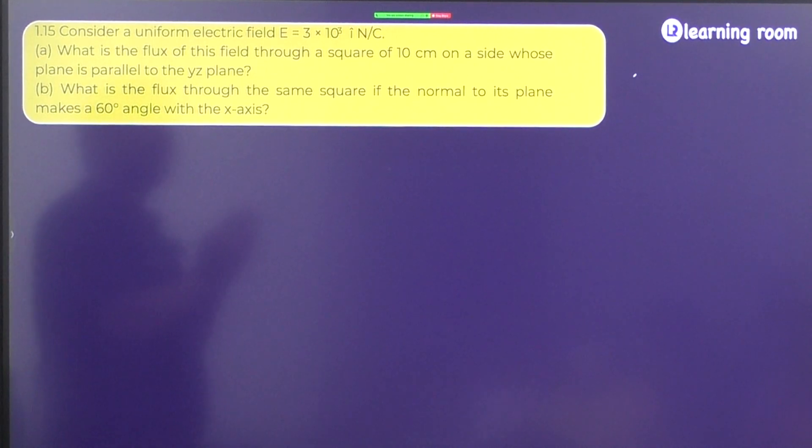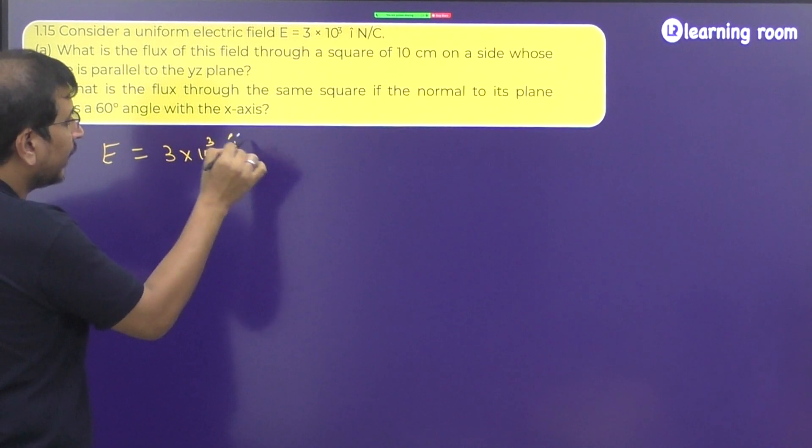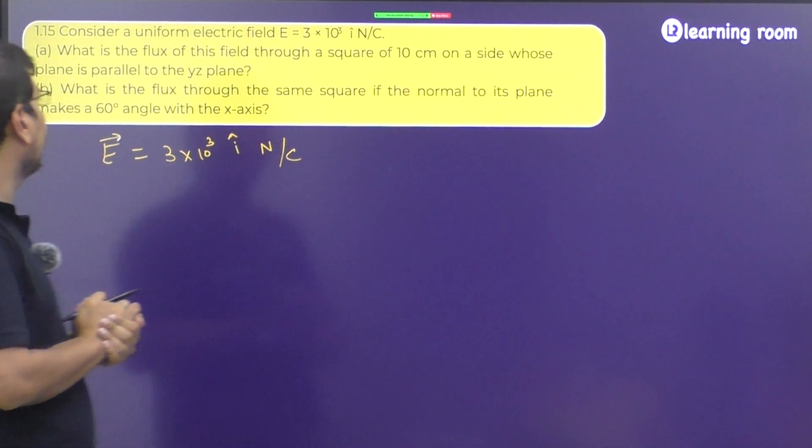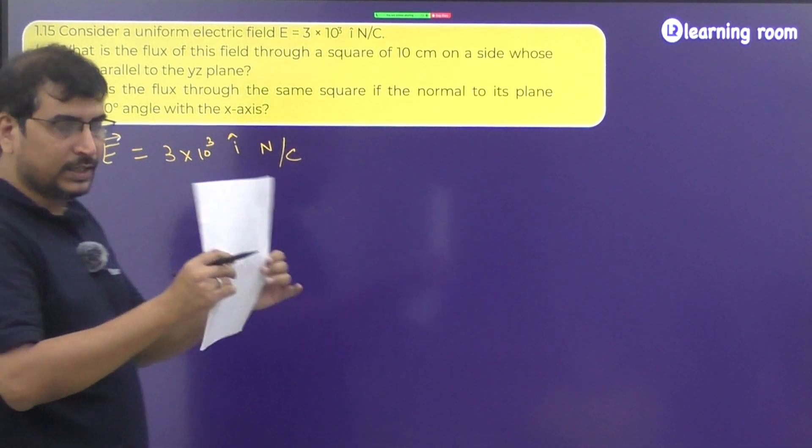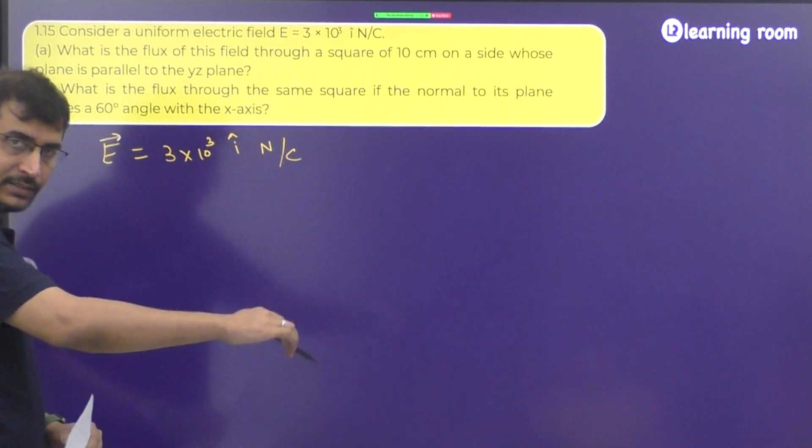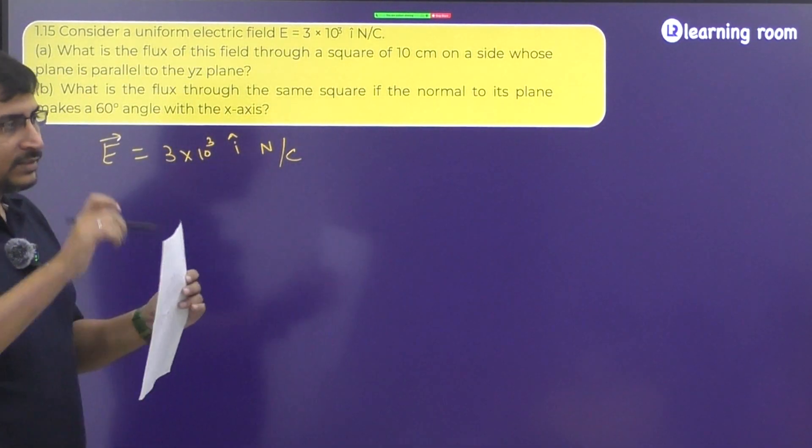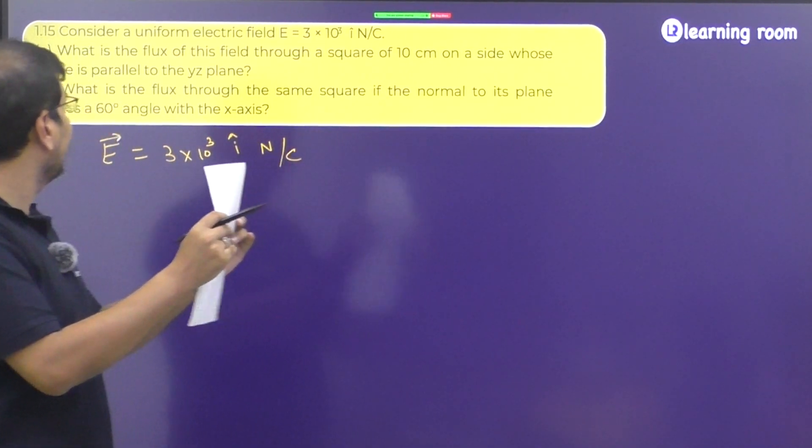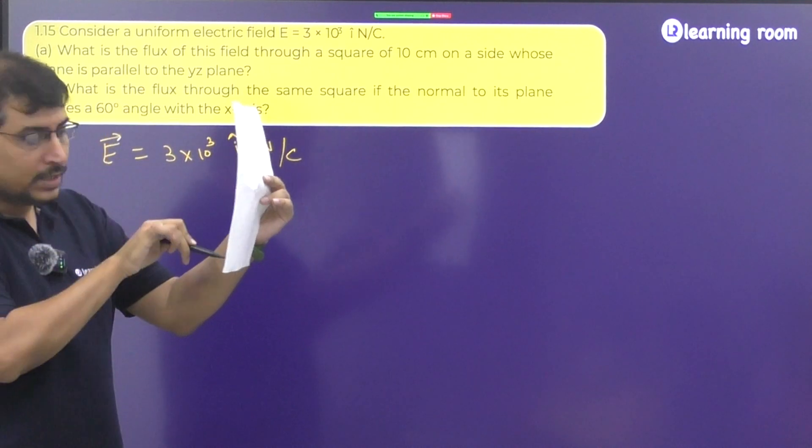Consider a uniform electric field E is equal to 3 into 10 power 3 I cap Newton per Coulomb. So write this as E vector. What is the flux of this field through a square of 10 centimeter on a side whose plane is parallel to the YZ plane? Suppose you have a square like this. This is X axis, Y axis and something towards you is taken as the Z axis. There is an electric field existing in this direction. Now there is a square whose side is parallel to the YZ plane.